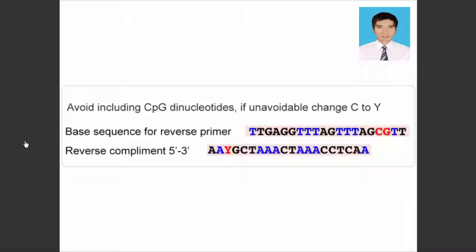CpG dinucleotides should be avoided in the primer sequence to avoid potential bias towards methylated, unmethylated, or unconverted templates. However, if unavoidable, the cytosine in the CpG sites should be replaced with a Y to help ensure unbiased amplification of converted DNA.